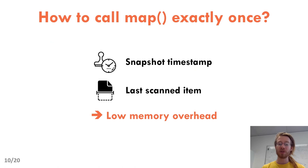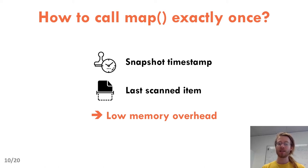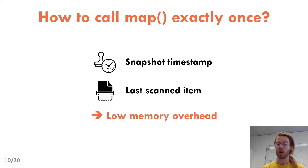It's very important that the map function is called exactly once. Otherwise, a developer would have to remember which items it has already seen, and this would have a prohibitive memory overhead. To that end, OLCP queries remember the timestamp of their snapshot and the last item they scanned, and that's it. So OLCP queries have a low memory overhead, and I will show how that works.